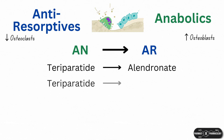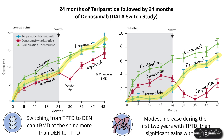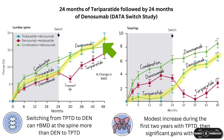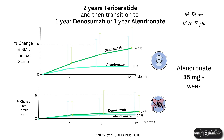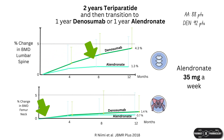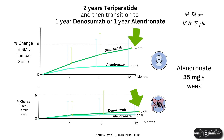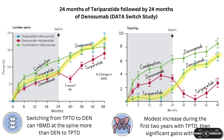How about teriparatide to denosumab? In the DATA-Switch study, patients were on teriparatide for two years and then denosumab for two further years. After two years of teriparatide, spine BMD gains were around 9%, and after switching to denosumab a further approximately 7% was gained over two years—giving an impressive total of 18–19% at the spine. For total hip it was a further 4–5%, giving a total gain of approximately 6%. It is clear that denosumab after teriparatide is able to further increase BMD at both the spine and hip, with no apparent blunting of denosumab's effects by teriparatide.